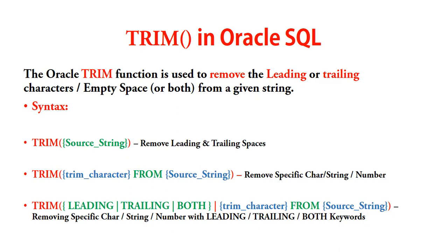In the second syntax, inside the Trim function we give the trim character, then the FROM keyword, then the source string. For example: TRIM(0 FROM '0123'). The third syntax includes Trim with the LEADING, TRAILING, or BOTH keywords. The first two syntaxes handle removal of spaces and removal of any specific character from the source string.